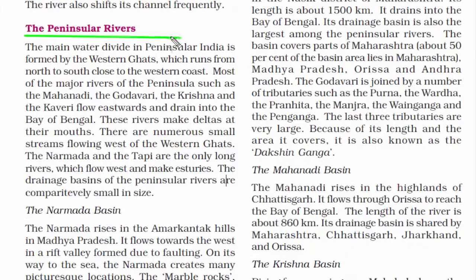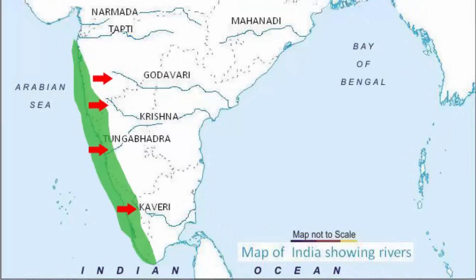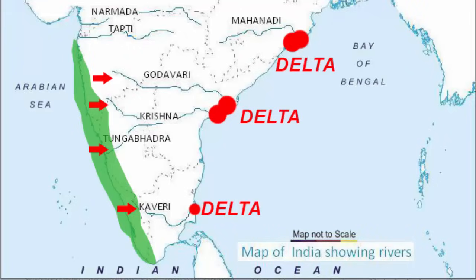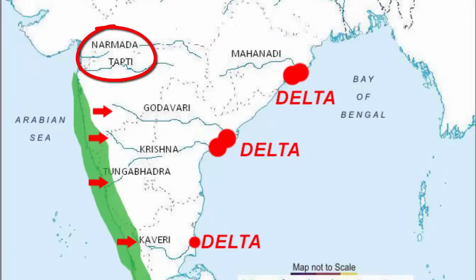Now let's read about the peninsular rivers. The main reason behind the water divide in peninsular India is the Western Ghats, because most peninsular rivers originate in this region — rivers such as Mahanadi, Godavari, Krishna and Kaveri. Due to the fact that the Western Ghats are slightly elevated, the rivers flow eastward and drain into the Bay of Bengal, also forming deltas at the mouth. The Narmada and Tapi are the only long rivers which flow westward into the Arabian Sea.